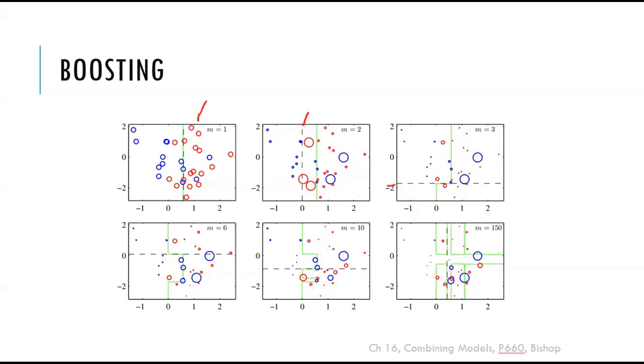So you can see base learners that simple threshold based one node decision tree learners. They are applied to one or the other of the axis. There are only two inputs here. And each figure shows the number of base learners involved in creating that decision boundary. The final ensemble is of 150 learners.